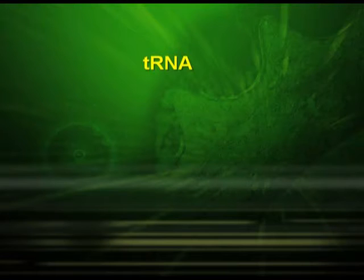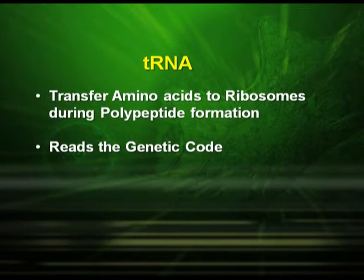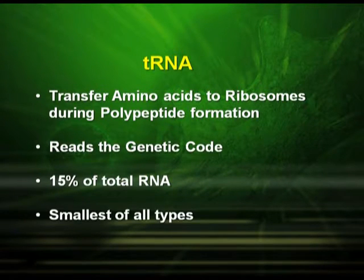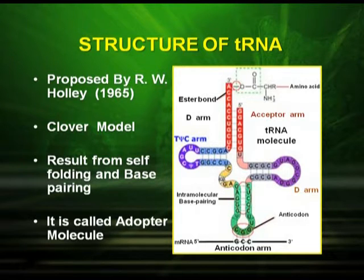The next type of RNA is tRNA, generally called transfer RNA. As the name indicates, it transfers amino acids to ribosomes during polypeptide formation. It can read the genetic code. It makes 15% of the total RNA and it is the smallest of all types. This is a very famous structure proposed by R.W. Holley in 1965. It is commonly called the cloverleaf model, which results from self-folding and base pairing. It is also called the adaptor molecule because it can adopt the amino acid from the cytoplasm and transfer it to the messenger RNA.